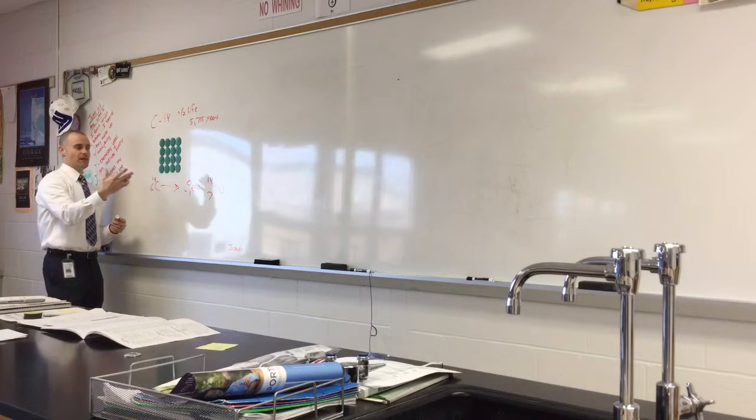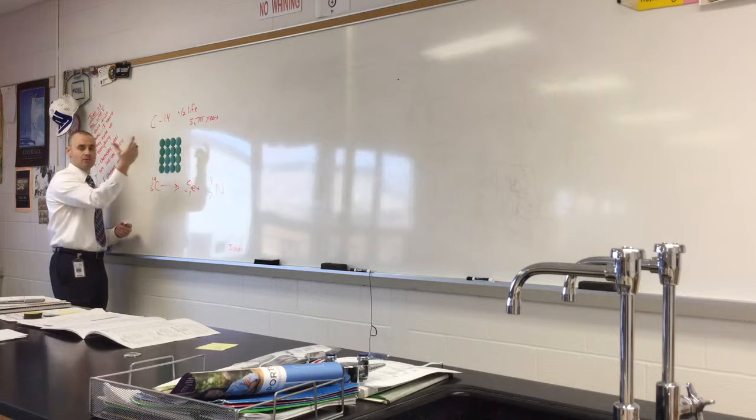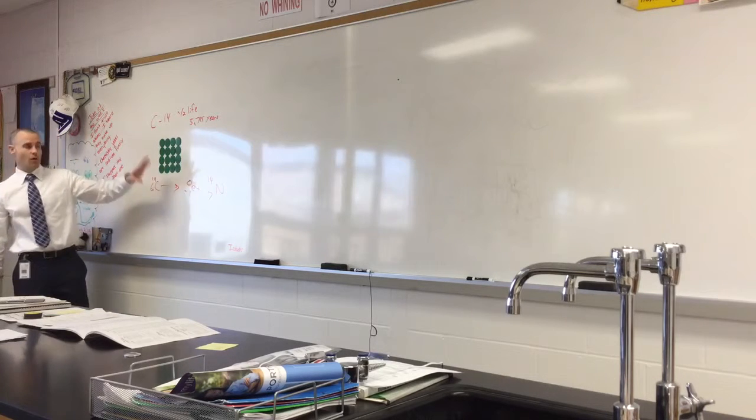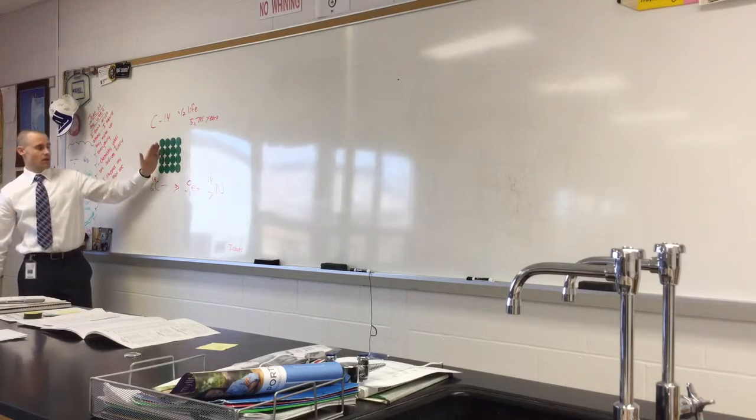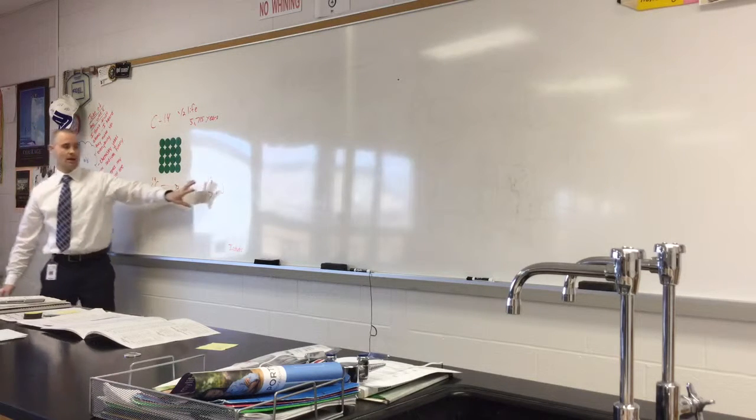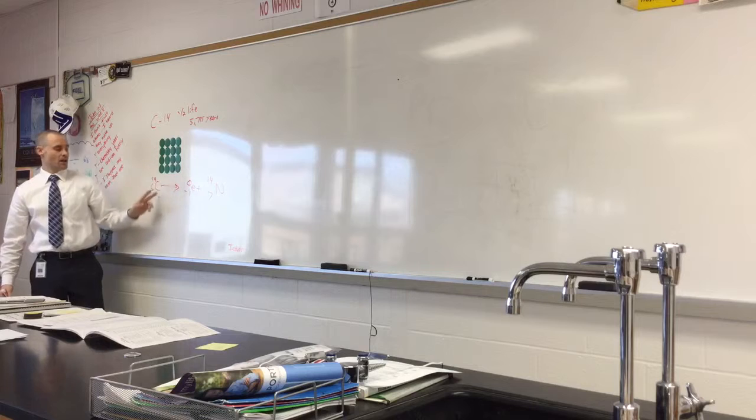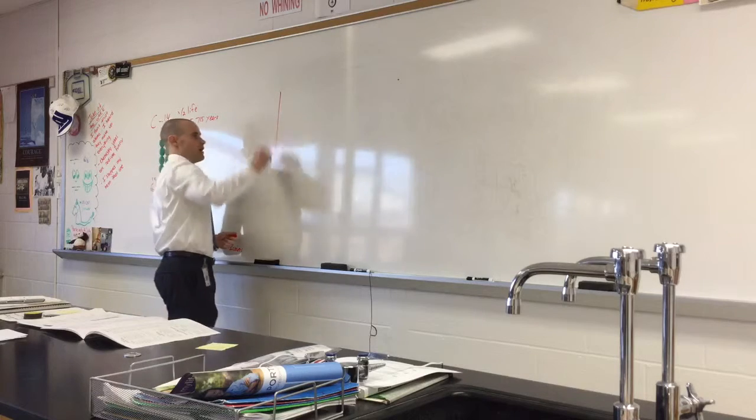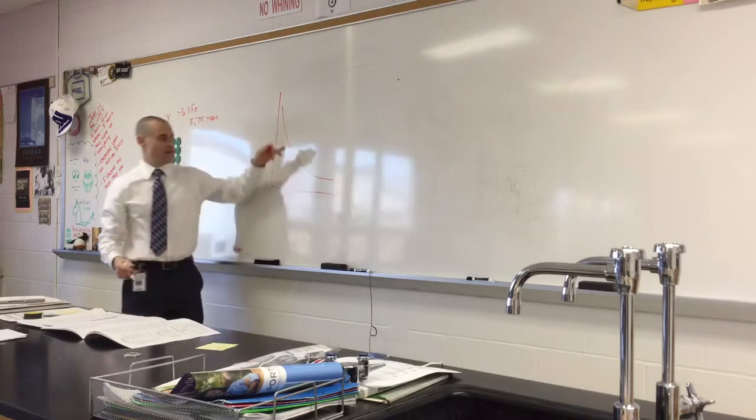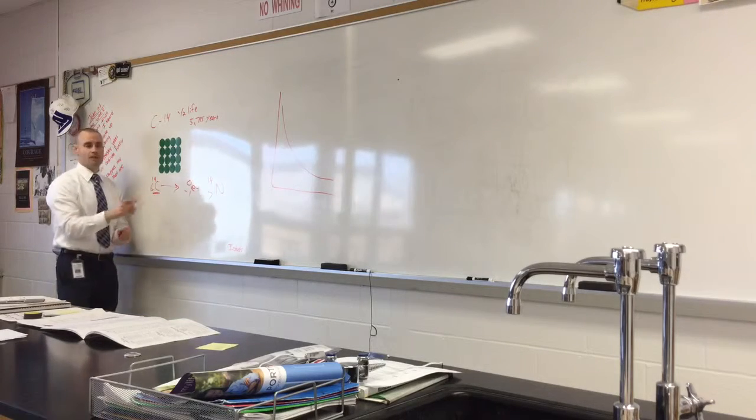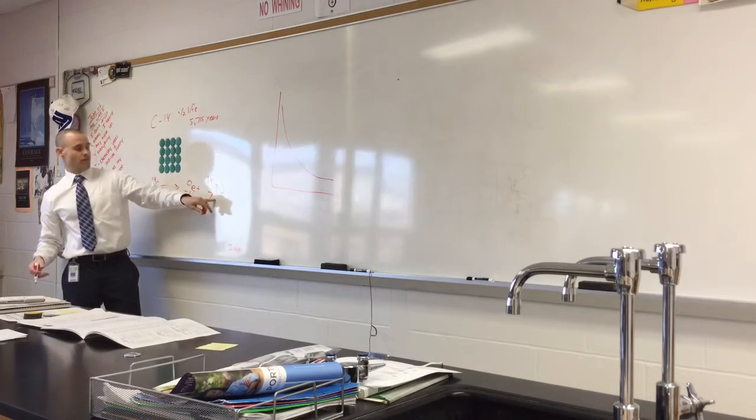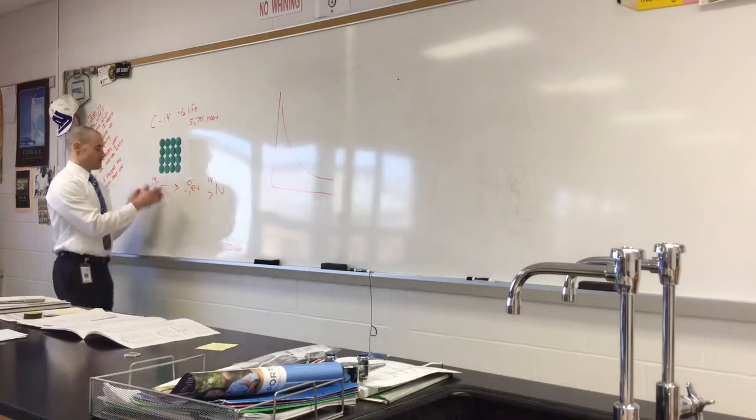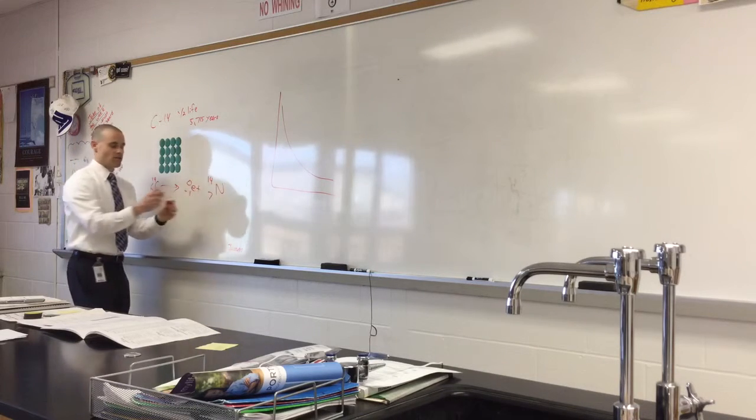So, after 5,715 years, half of these nuclei, half of these atoms, will transmutate into a different color, is the analogy, and it would be nitrogen. So, after one half-life, there's a one-to-one ratio between carbon and nitrogen. After two half-lives, carbon will decrease even more, but nitrogen will increase. So, when you look at a half-life graph, you don't have to sketch it, you already have one.